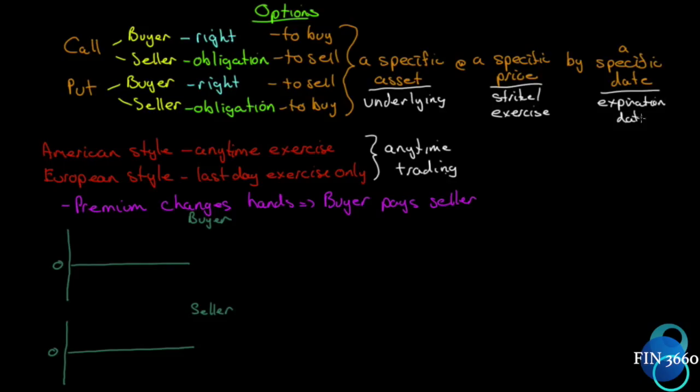Options can be American style or European style. American style options means they can be exercised at any time during the life of the option. European style means last day exercise only. Most exchange-traded options are American style—anytime exercise, not all, but most.